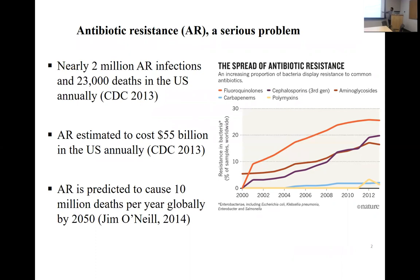We need to find some alternatives. If we look at some statistics, there are nearly two million bacterial infections occurring every year, causing almost 23,000 deaths per year in the US, at a cost of almost 55 billion dollars according to the CDC. By 2050, antibiotic-resistant infections are going to be the major cause of death, causing almost 10 million deaths per year.